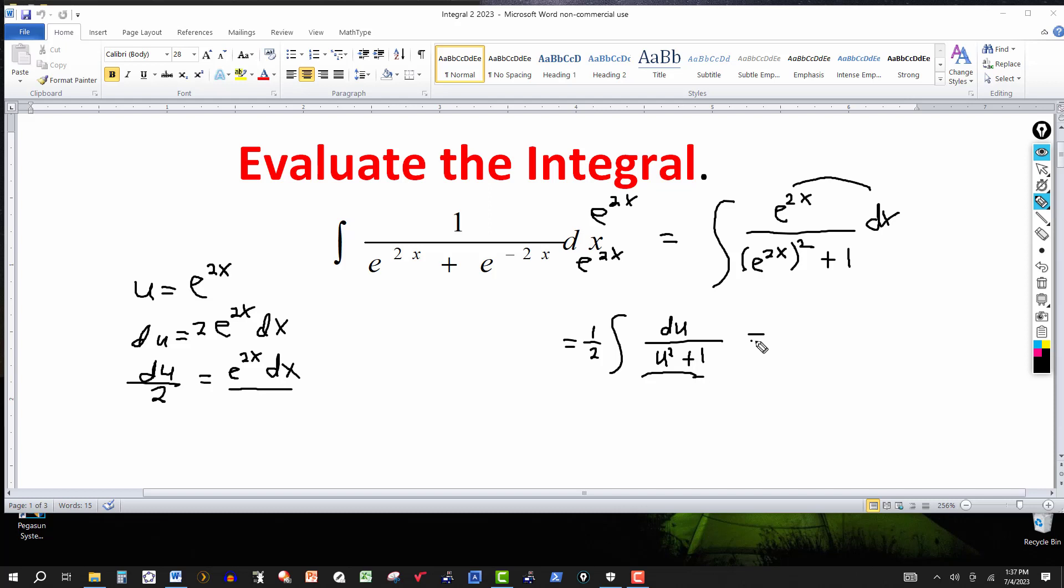So this then will equal 1 half, and this will be arctangent. And this will be u over a, where a here is 1, it's in the form u squared plus a squared. So 1 squared is 1, so a would be 1. So it would be u over 1, but u is e to the 2x.